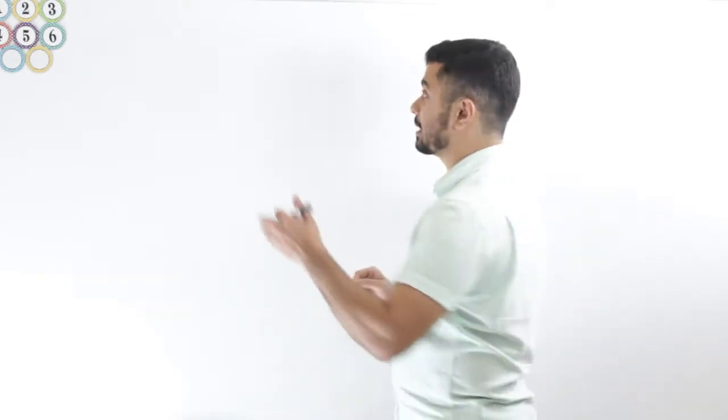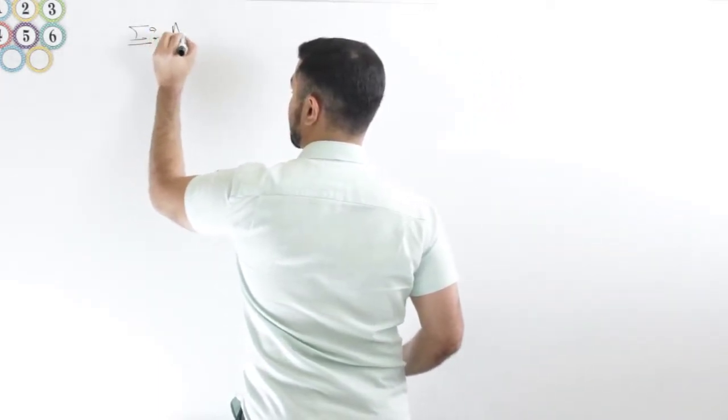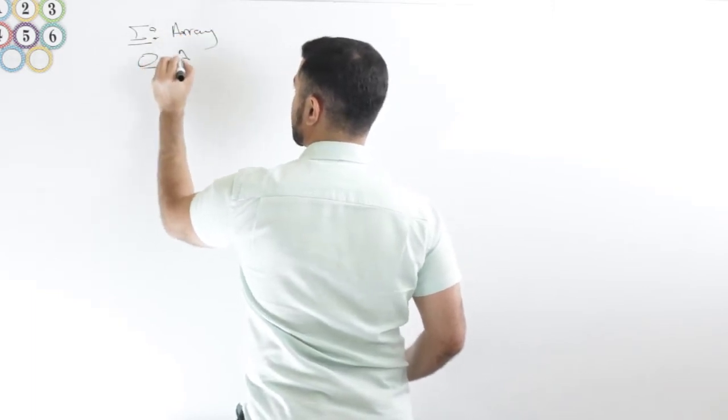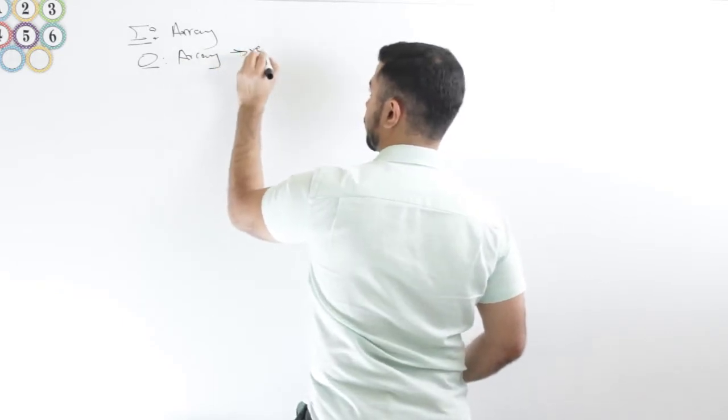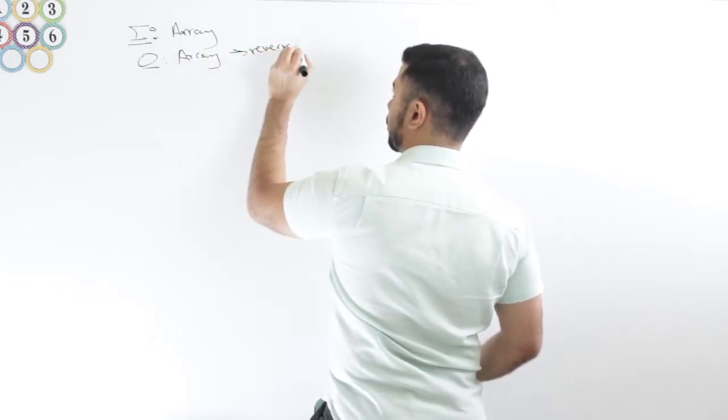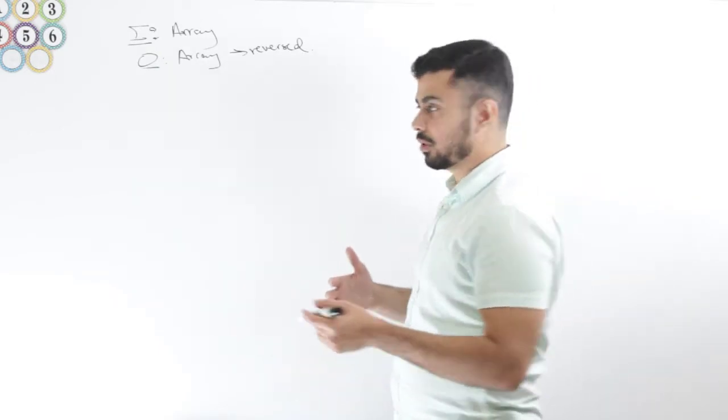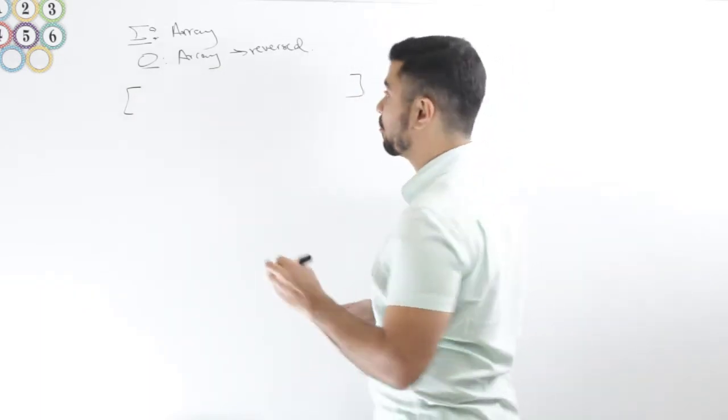Basically I have an input as an array. So let me just write it down. I is an array and my output should be the same array but reversed. Okay, perfect. So let me just go through an example and we'll go into the code after that. Is that okay? Yeah, perfect.